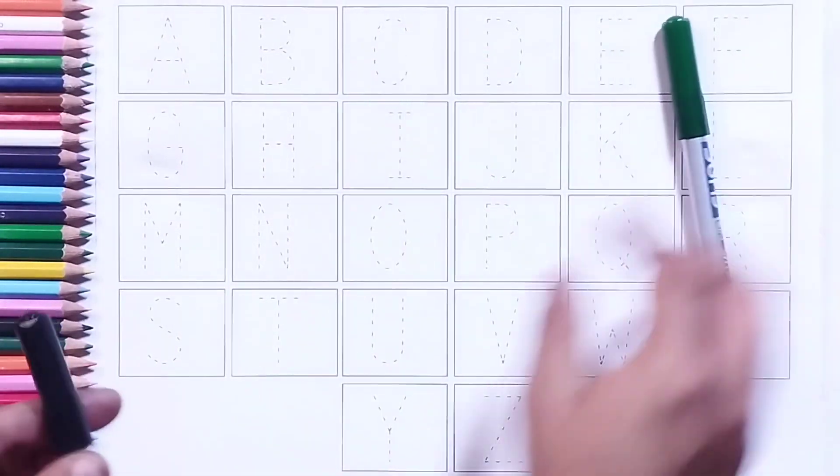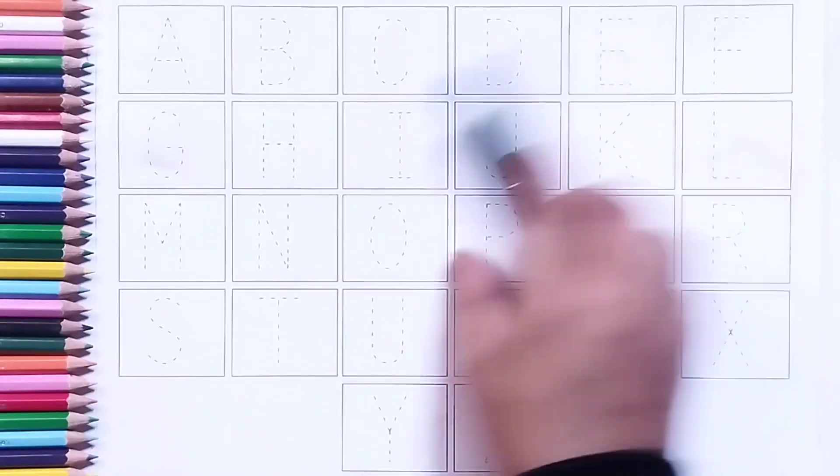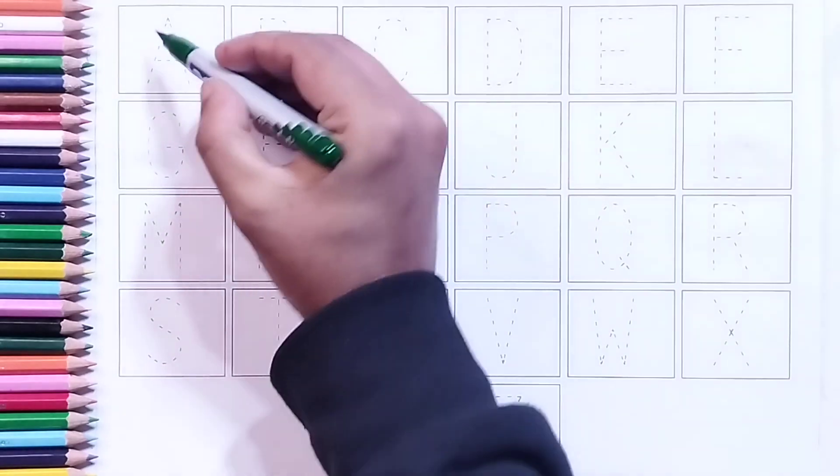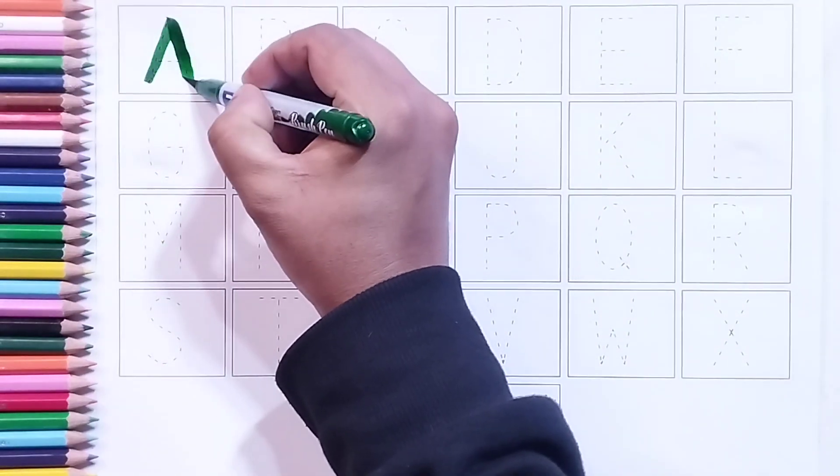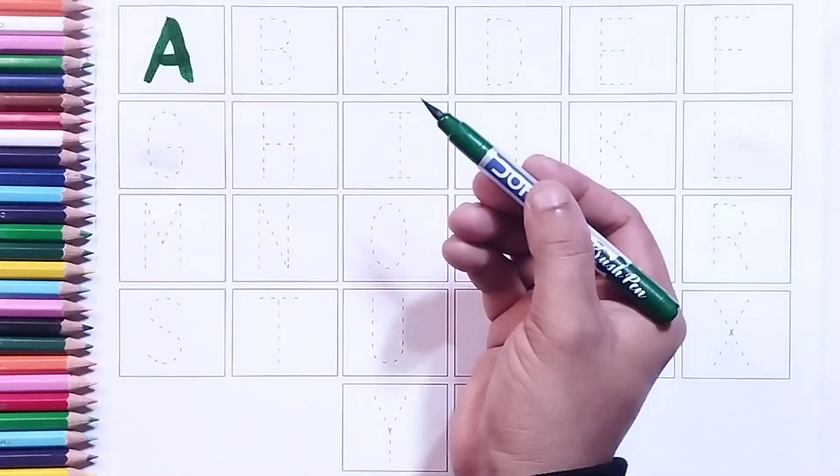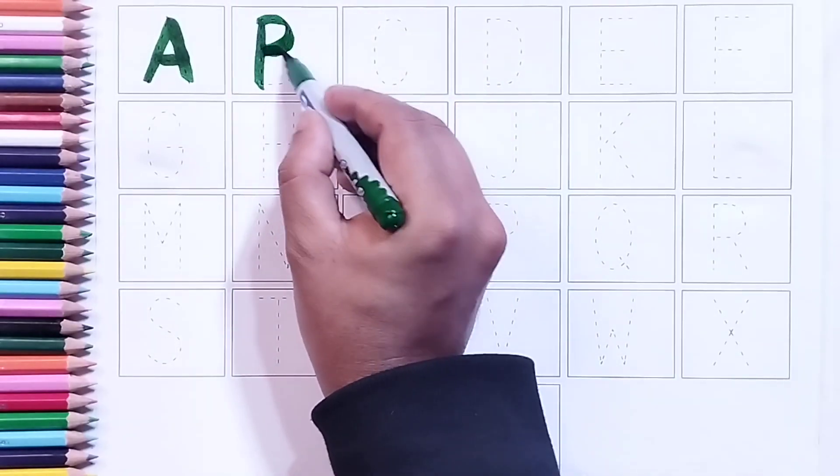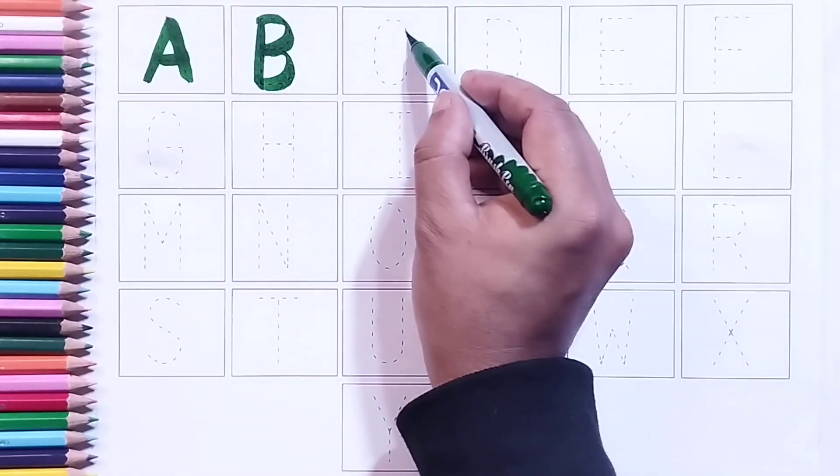Green color, black color. Green color. A, A for apple. Green color. B, B for ball. Green color. C